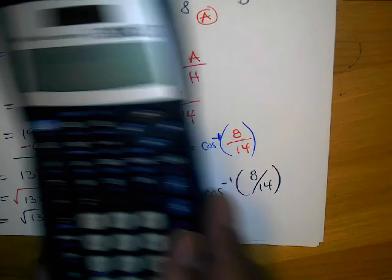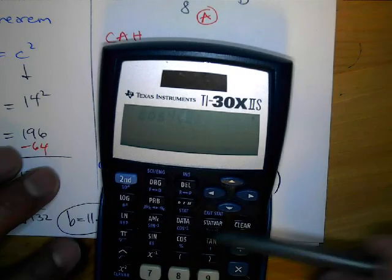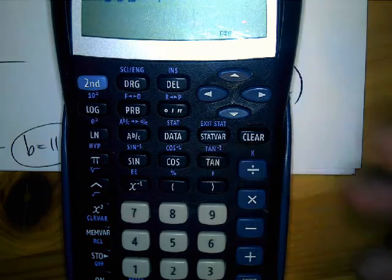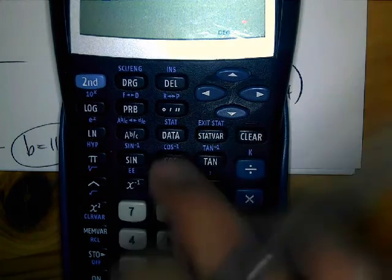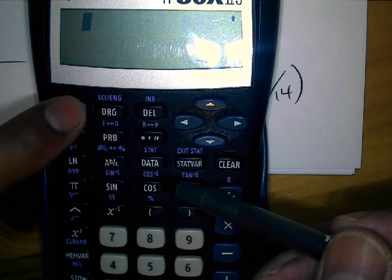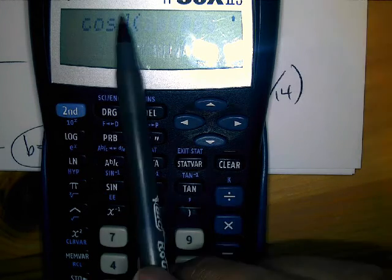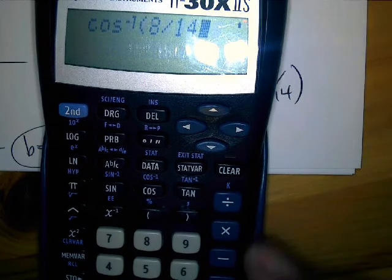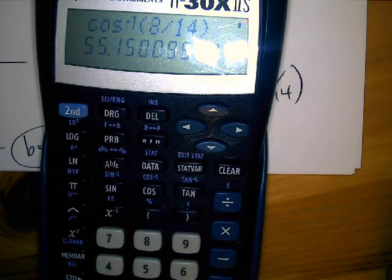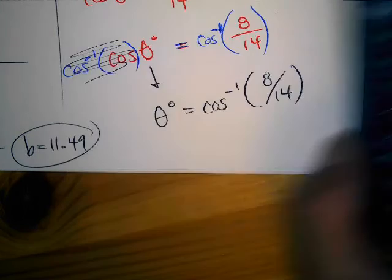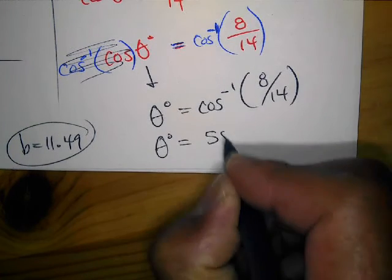All right, let's see what that is. That's going to be second function cosine inverse. Remember we've got to use the, zoom in here, the inverse is this one here, this little one here, so you can't just use the cosine button. You've got to do, hit the second, the blue function here, this button, and there's your inverse. Cosine inverse of what is it, 8 over 14, 8 divided by 14, close the parentheses. And there it is, 55.15, 55.15.